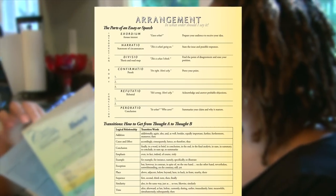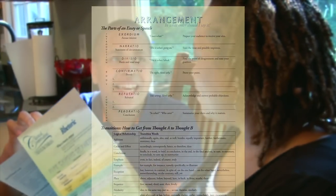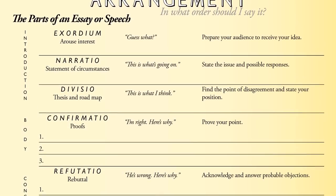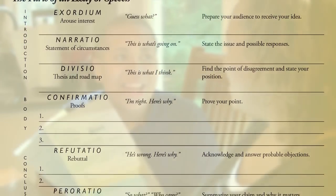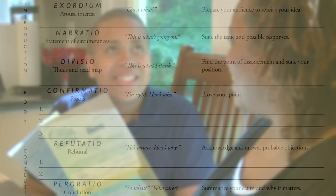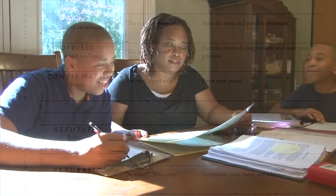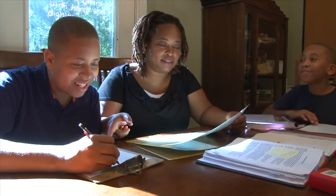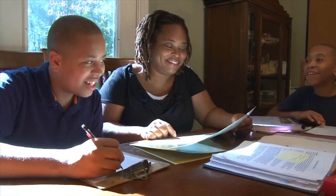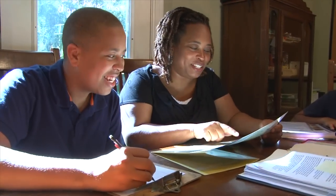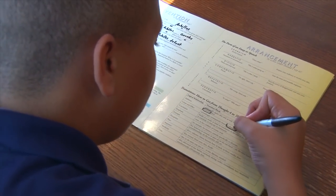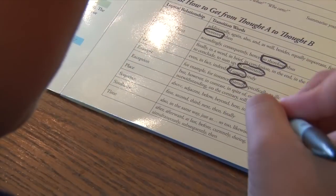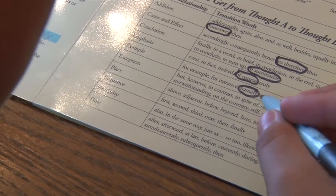The arrangement section helps your student put ideas in a meaningful order. The top half of this page is a chart including the three parts of every speech or essay — the introduction, body, and conclusion — with subcategories and guiding questions. You and your student can think of this page as developing an overall map or outline for your thoughts. The bottom half of the page includes words and phrases to help the student transition from one section of the essay to the next.